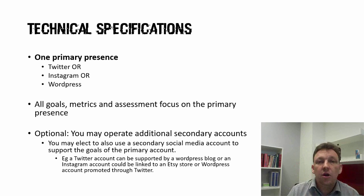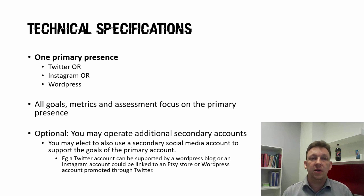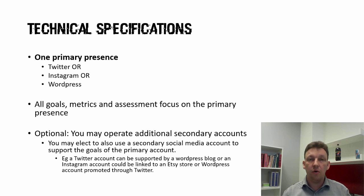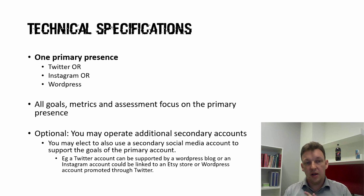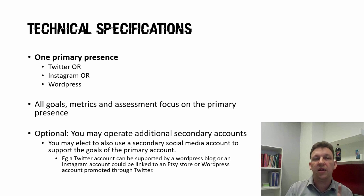You get one primary presence — that is what we are going to assess you around. You either have a Twitter account, an Instagram account, or a WordPress blog as your primary means by which you'll achieve and document your goal. All the metrics, measurements, and assessment tasks that follow will use the primary presence. A secondary account is still available and can support your primary presence, but it won't count to your metrics or be what you write your assignment on. You've got to pick one.